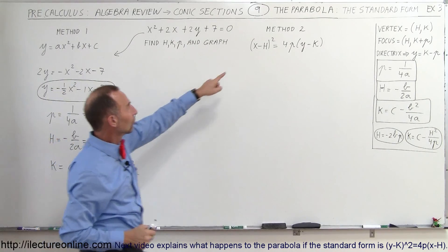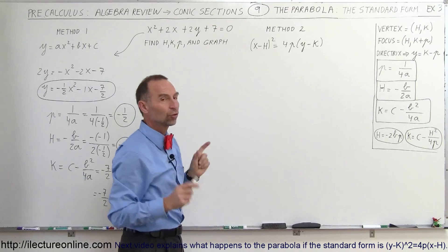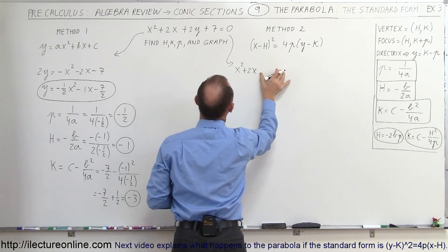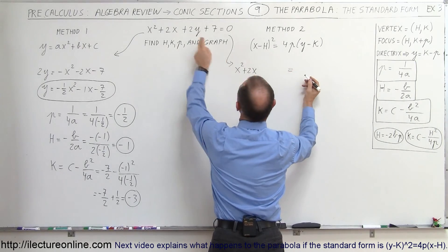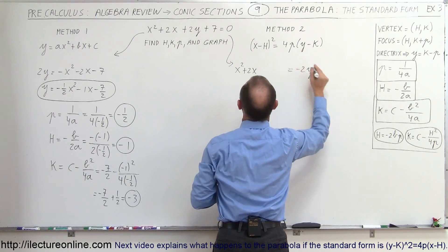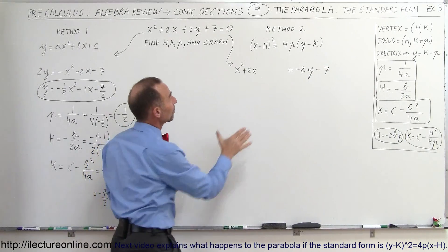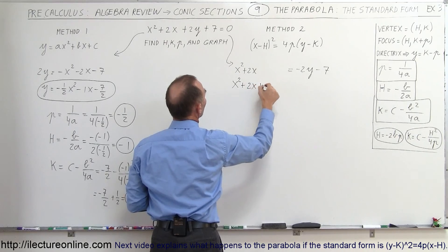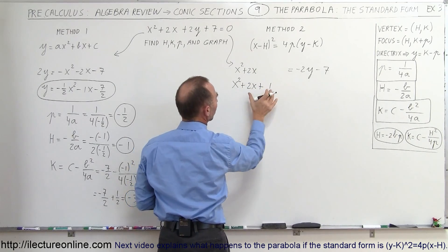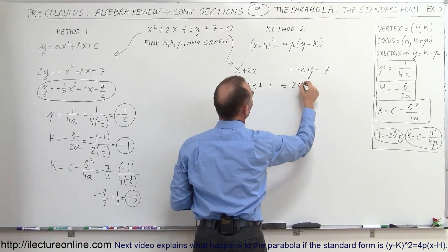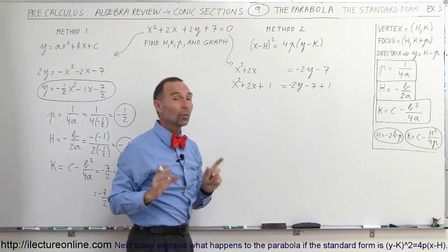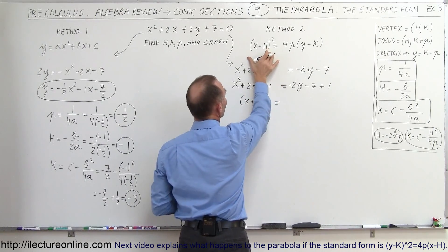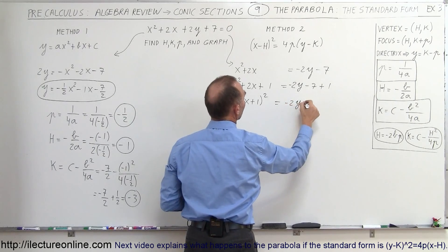To do that, we need the left side to become a perfect square — a binomial squared. We rewrite as x squared plus 2x plus something equals negative 2y minus 7. To complete the square, take half of the coefficient of x, which is half of 2 equals 1, square it to get 1, and add 1 to both sides. The left side becomes x plus 1 quantity squared, and the right side becomes negative 2y minus 6.